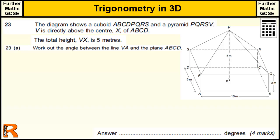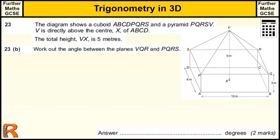Here we have a question on trigonometry in 3D. This is a Further Maths GCSE question, which is a level 2 qualification. This is question 23, one of the last questions — I think it's the third from last. Let's split it into a couple of parts: part A is to work out the angle between VA and the plane ABCD, and part B is to work out another angle. Have a go at those first, then rewind and forward to check your answers.